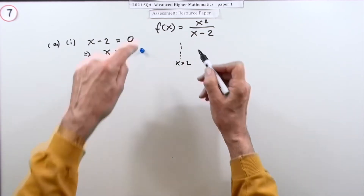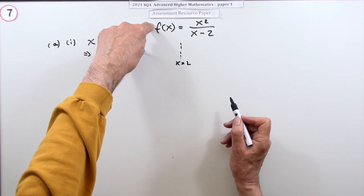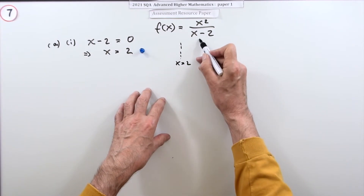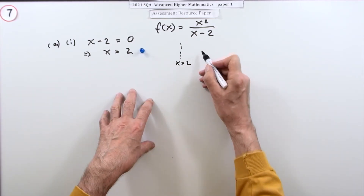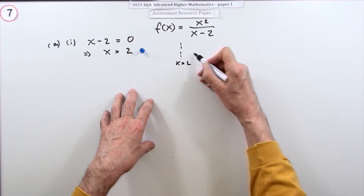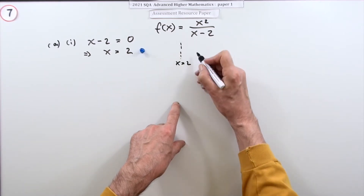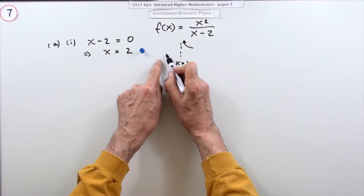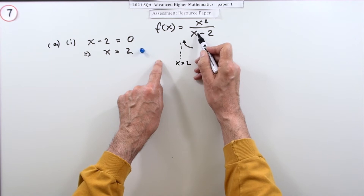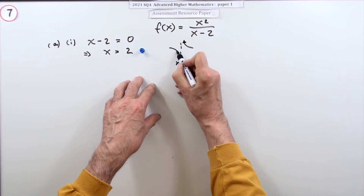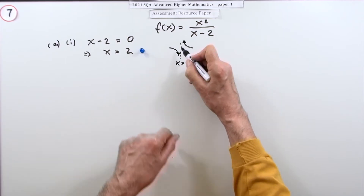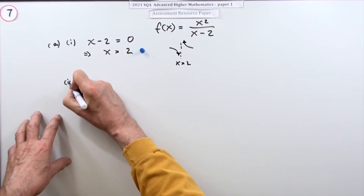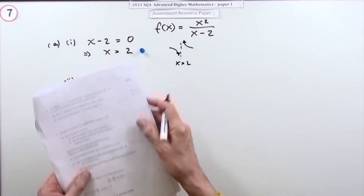At the same time, sketch what happens to the function as you approach this asymptote. Approaching from the right, x is bigger than 2, so the value is positive - the graph goes up. Approaching from the left, x is less than 2, so it's negative - the graph goes down. That's the picture of the graph as it approaches the vertical asymptote.